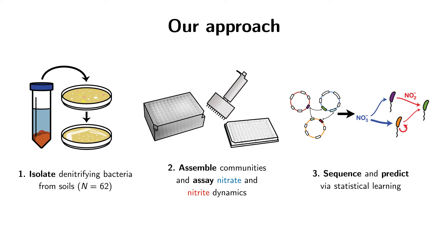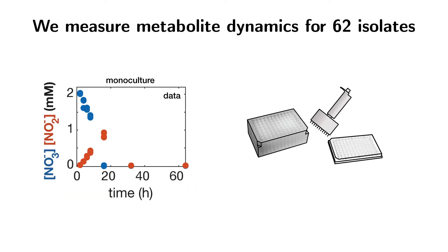After we've isolated our denitrifying bacteria from soils, we measure their metabolite dynamics in monoculture. To give you a sense of the readout, I'm plotting a time series of nitrate and nitrite concentrations over about a 60-hour period. Initially, this particular strain consumes its initially provided nitrate over a course of around 16 hours, and at the same time excretes a small amount of nitrite, which it then consumes later as well.